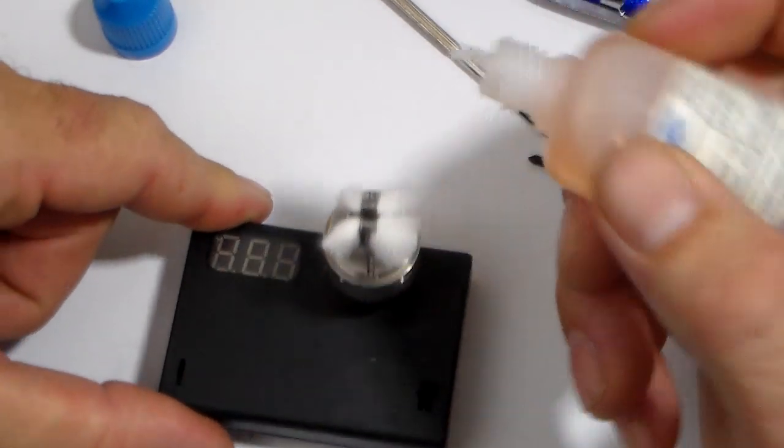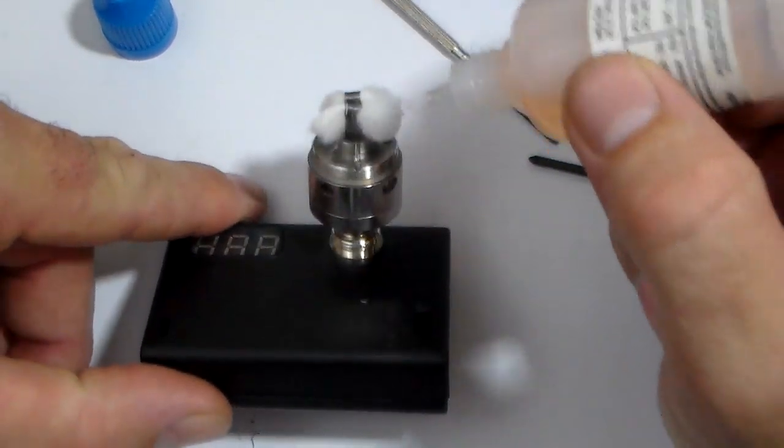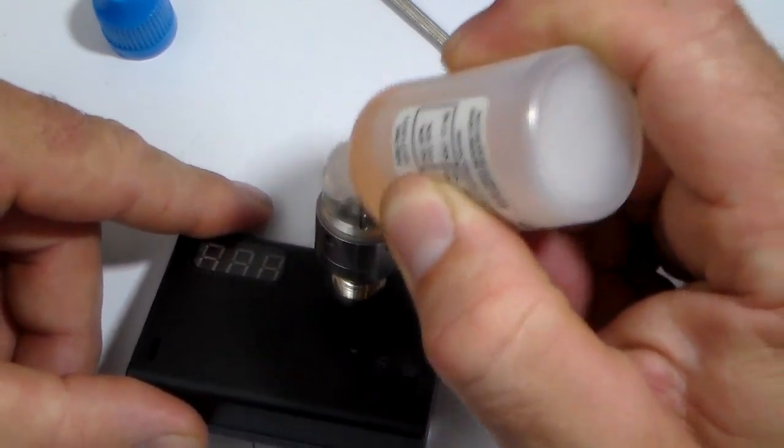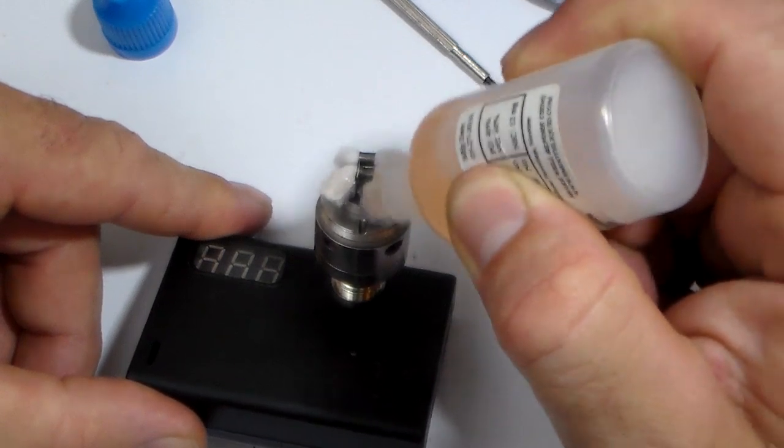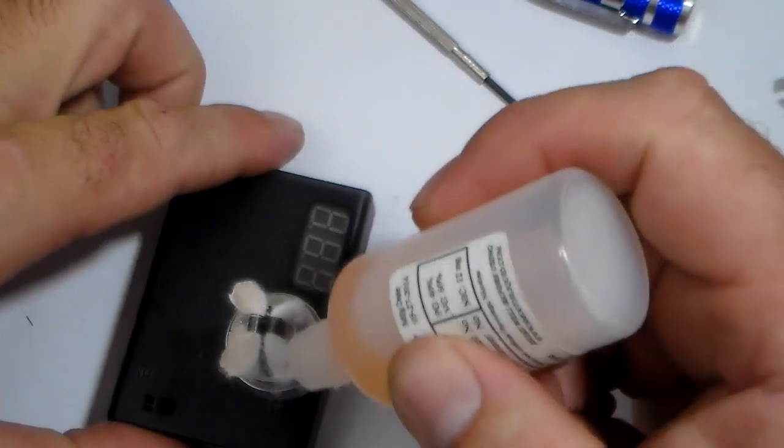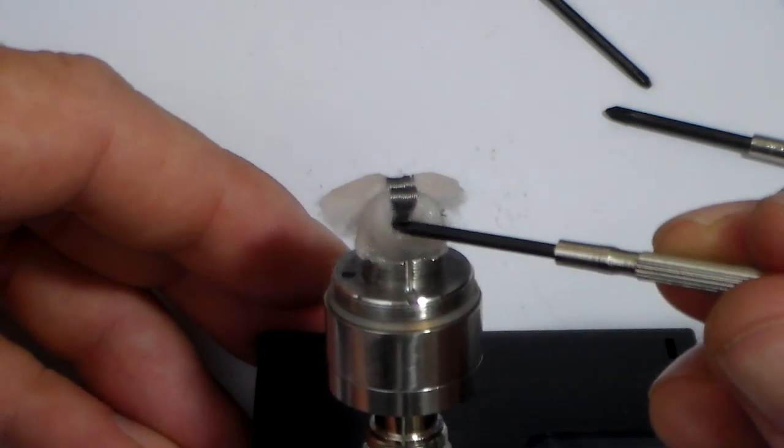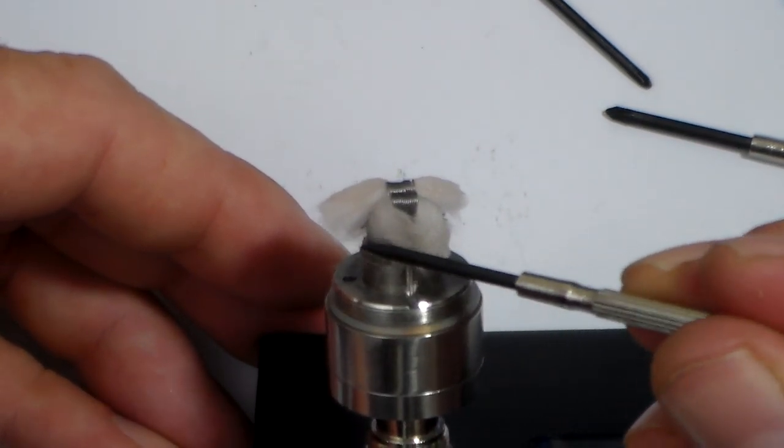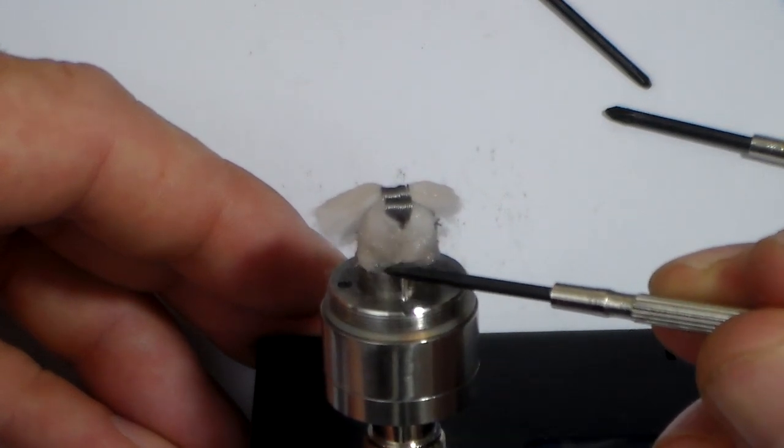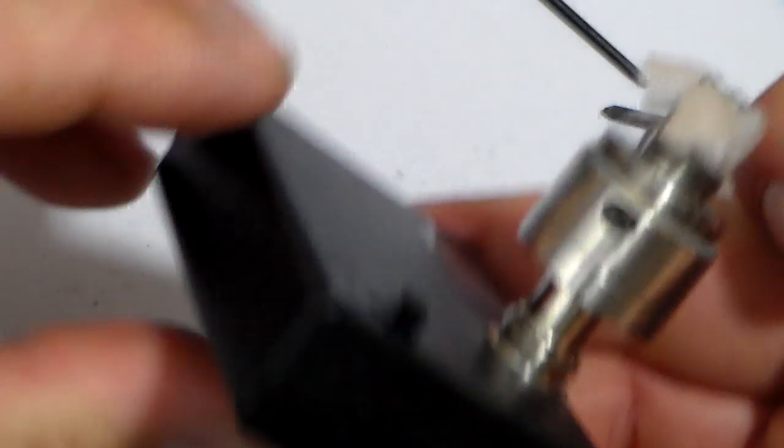Alright, now what we got to do is saturate our wicks here. I'm going to be using the Blue Dragon from Smooth Liquid. I haven't vaped on this in a while and should be a good build to use it on. You just want to get your cotton saturated but not dripping. Now placement of the cotton on the Kayfun is critical to not get any leaking or burnt hits. You want that cotton just draped down along that ridge right here, below your coils.